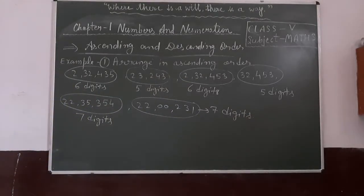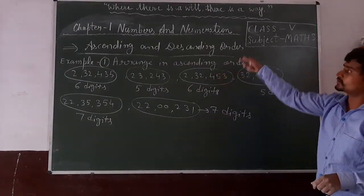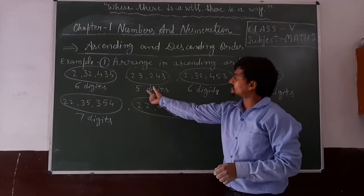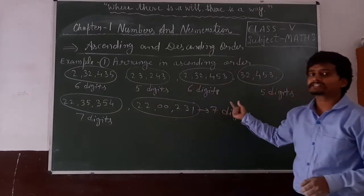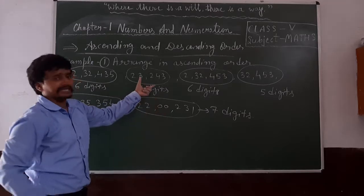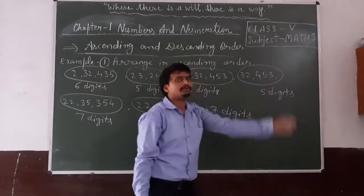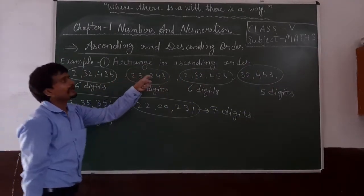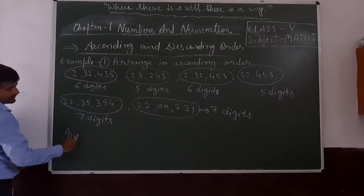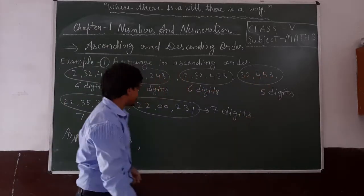As we know, ascending order means to arrange from the smallest to the largest. So first of all we will write the numerals that have the lowest number of digits. We have 2 numerals with 5 digits: 23,243 and 32,453. Here the leftmost digit is 2 and here it is 3, so 23,243 is the smallest. Write it first, then 32,453.